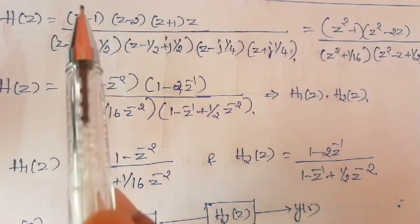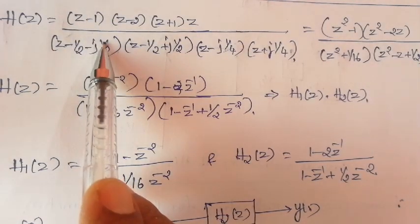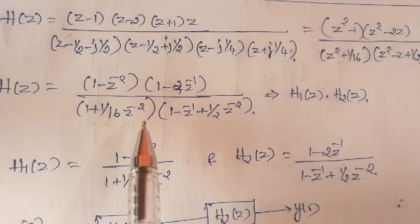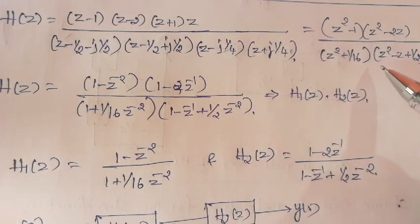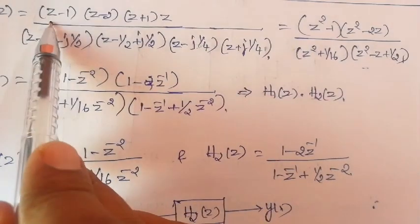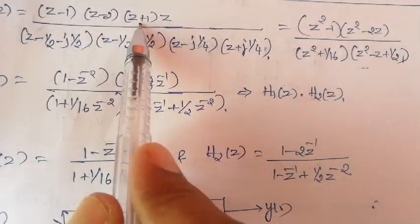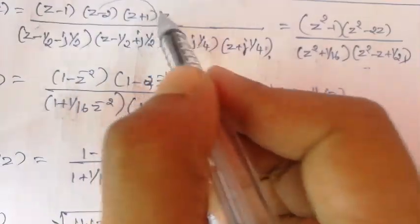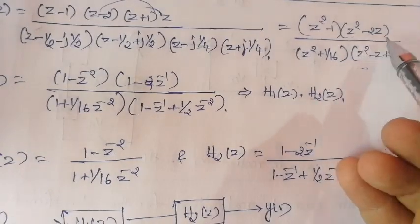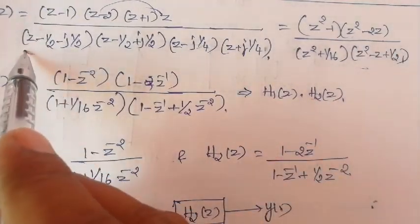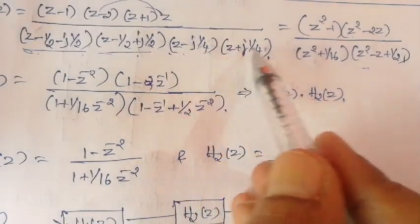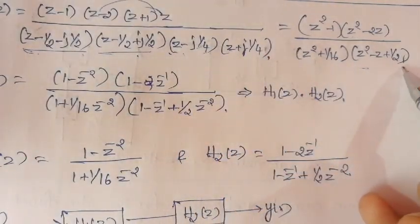This is the same example we discussed for diagram realization; the simplification part was discussed in detail in that video — you can refer to that video. Here, z minus 1 multiplied by z plus 1 is (a minus b)(a plus b), which equals a squared minus b squared. Similarly, the multiplication of those two complex conjugate pairs simplifies to z squared minus 2z.